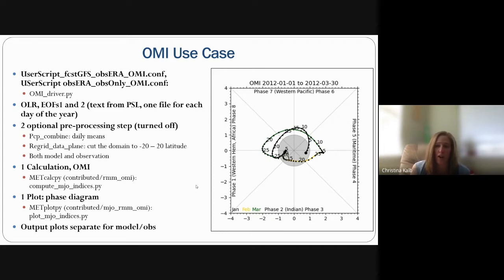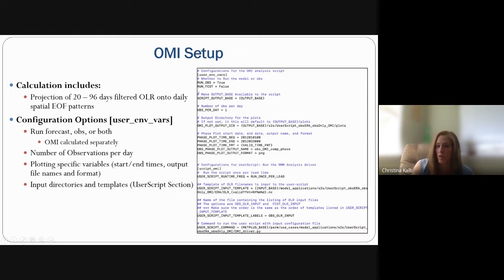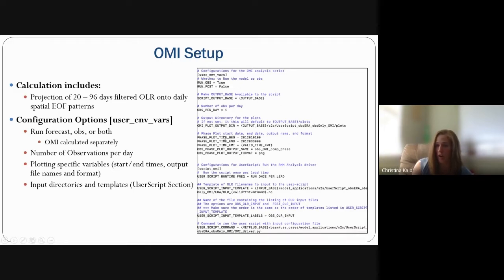There is one OMI calculation in METcalcpy — the OMI index — and one output plot: the phase diagram. Output plots are separate for model and observation. The calculation specifically includes projection of the 20- to 96-day filtered OLR onto the daily spatial EOF patterns. Configuration options include whether to run forecast or obs (true or false), number of observations per day, plotting variables such as plot output directory, plot time begin and end, output plot names, and input templates and labels in the User Script section.